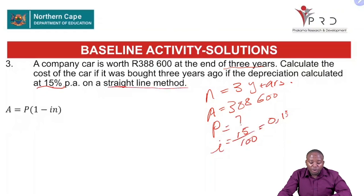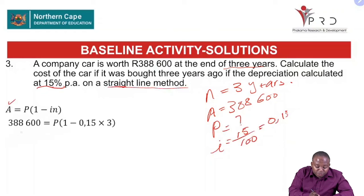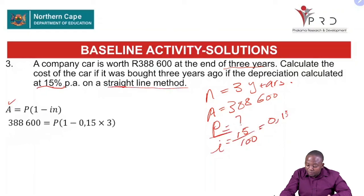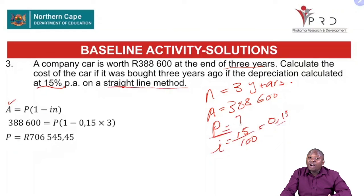The straight line formula is used. We substitute: 388,600 equals P times (1 minus 0.15 times 3). We solve for P and find that P equals 706,545.45.